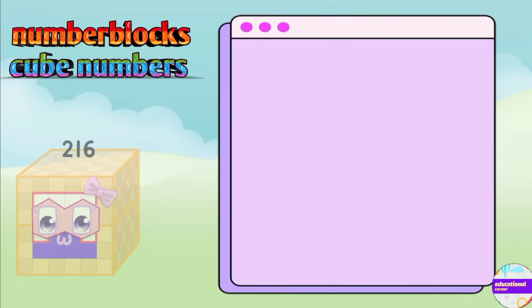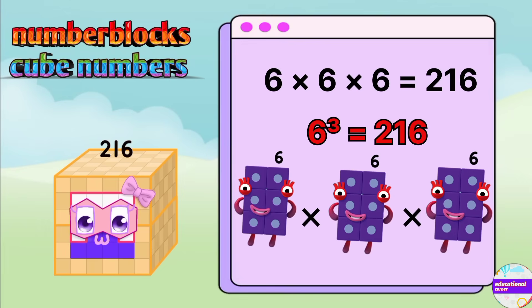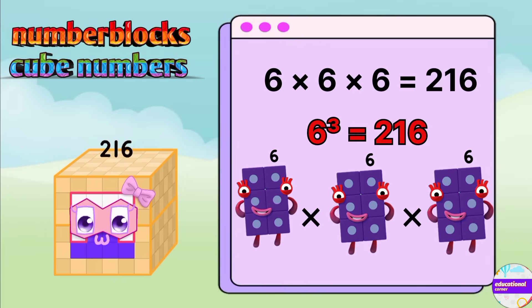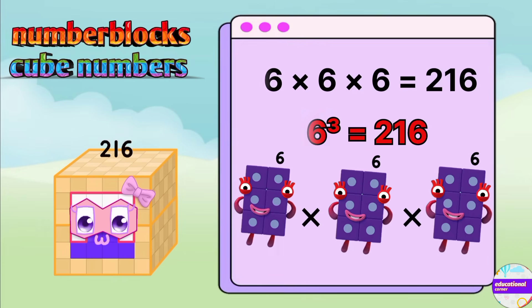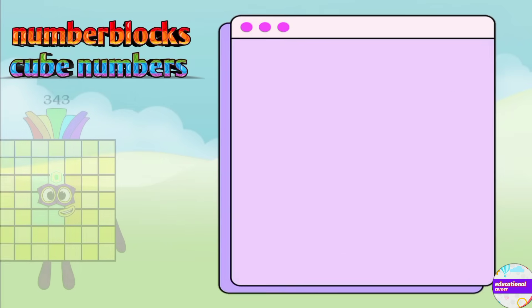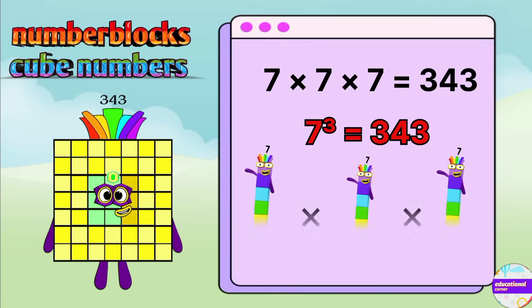216 is a cube of 6. 6 times 6 times 6. 343 is a cube of 7. 7 times 7 times 7.